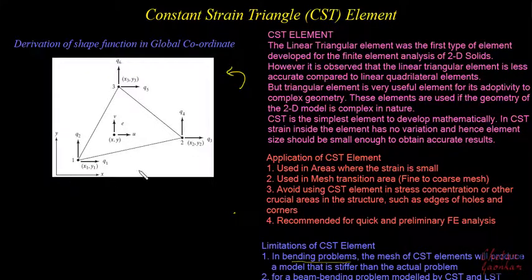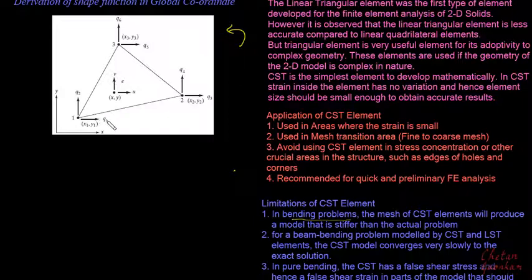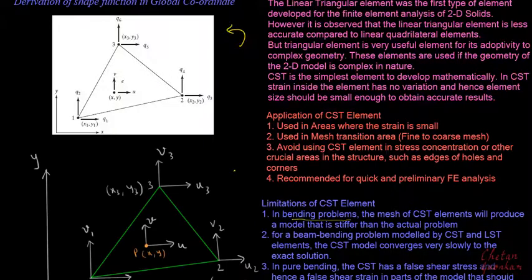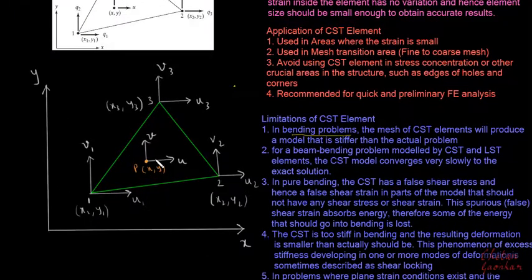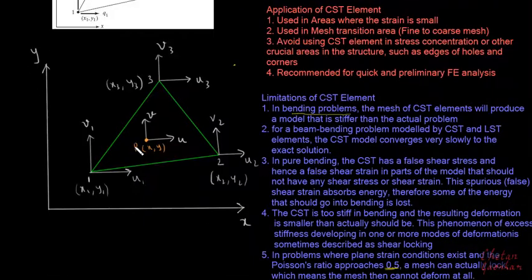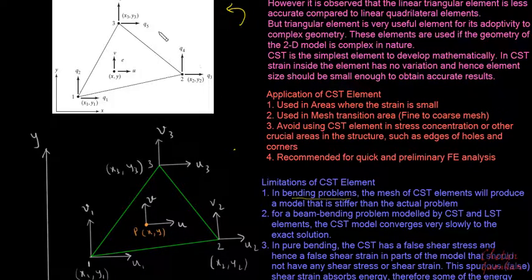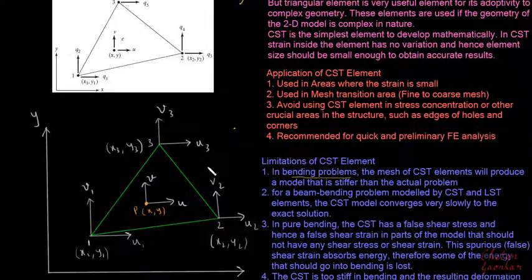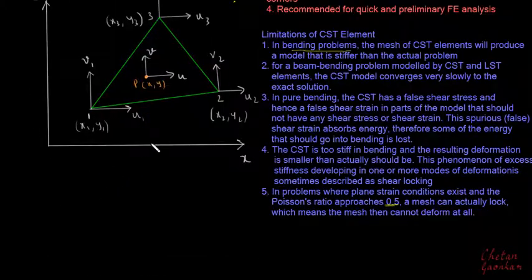The degrees of freedom in the x-direction are given by q1, q3, and q5, whereas the degrees of freedom in the y-direction are given by q2, q4, and q6. If I replace q1, q2, q3, q4, q5, q6 with u1, v1, etc., I get the same element but with the odd numbers q1, q3, q5 replaced by u1, u2, u3 and the even numbers q2, q4, q6 replaced by v1, v2, v3.